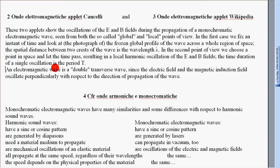An electromagnetic wave is a double transverse wave. Since the electric field and the magnetic induction field oscillate perpendicularly with respect to the direction of propagation of the wave.